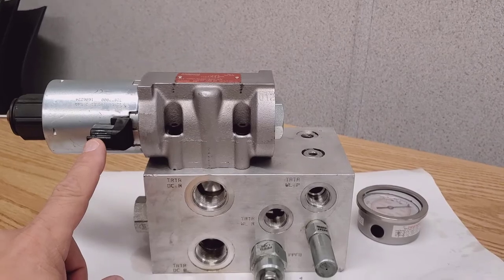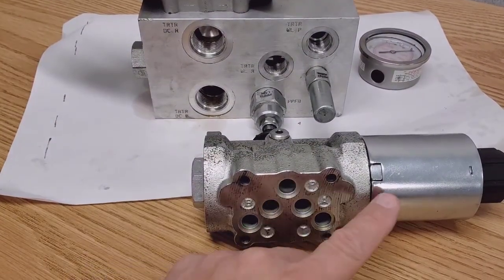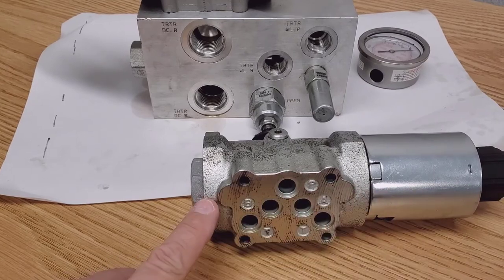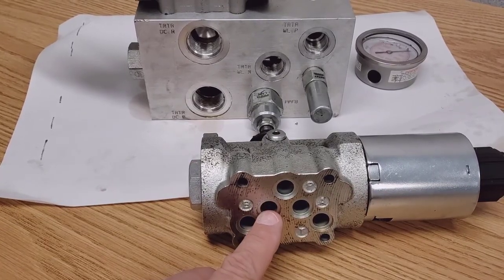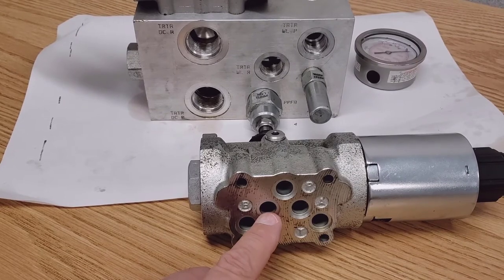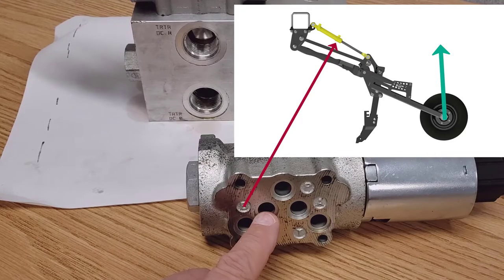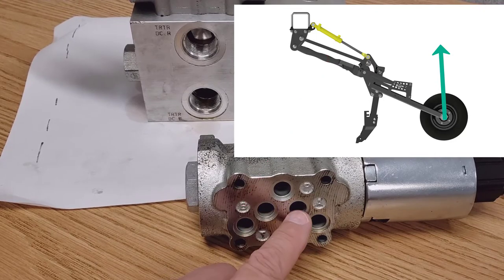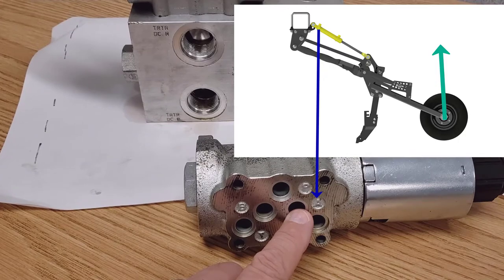Then when we power up that coil, what's happening is we're shuttling the spool across this way against the spring and opening up a path to B. So now we're pressuring up the rod end on the opener cylinders to raise the openers. And the base end becomes the return to raise the openers.